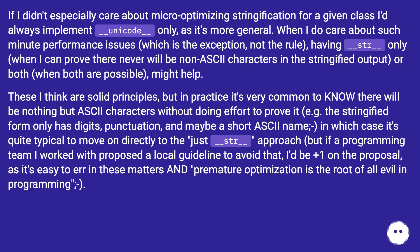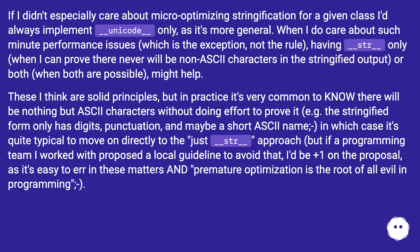These are solid principles, but in practice it's very common to know there will be nothing but ASCII characters without doing the effort to prove it — for example, the stringified form only has digits, punctuation, and maybe a short ASCII name — in which case it's quite typical to move directly to the just __str__ approach. But if a programming team I worked with proposed a local guideline to avoid that, I'd be plus one on the proposal, as it's easy to err in these matters and premature optimization is the root of all evil in programming.